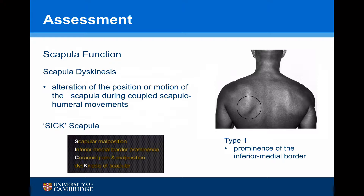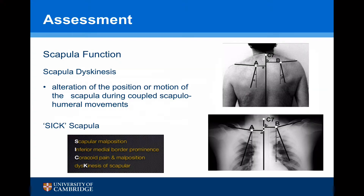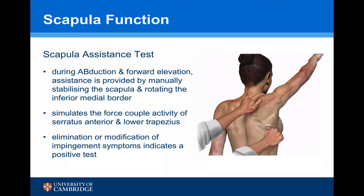The most common problem is scapular dyskinesis — an alteration of the position or motion of the scapula during coupled scapulohumeral movements. The most common type is type 1, which is prominence of the inferior medial border. The shoulder may also have a sick scapula, in which the scapula is malpositioned, with type 1 inferior medial border prominence, and there is coracoid pain and malposition. As a shoulder surgeon, the most important thing to assess is how much of the scapulothoracic pathology is affecting the glenohumeral pathology.